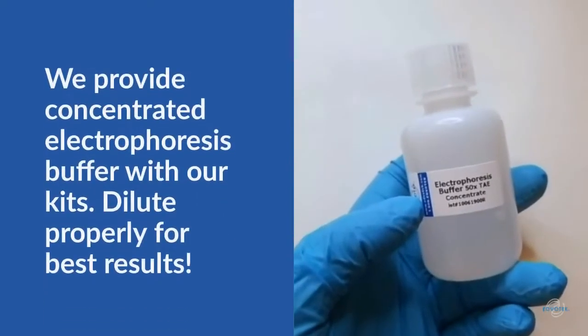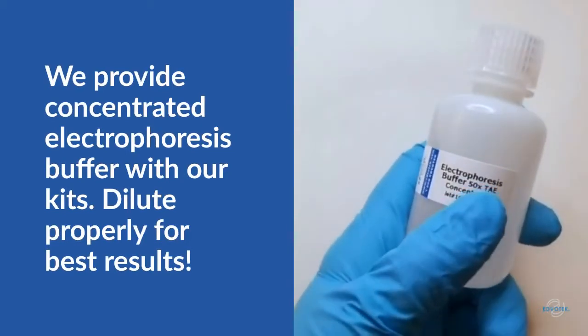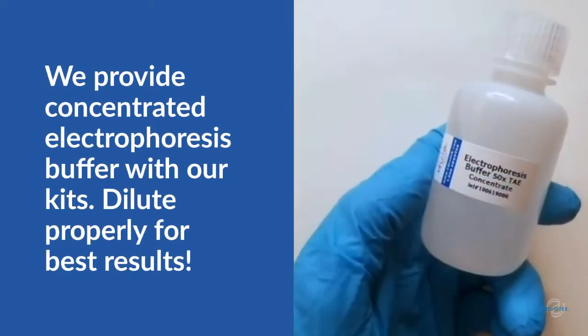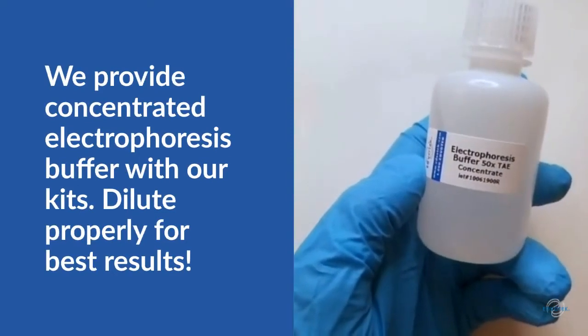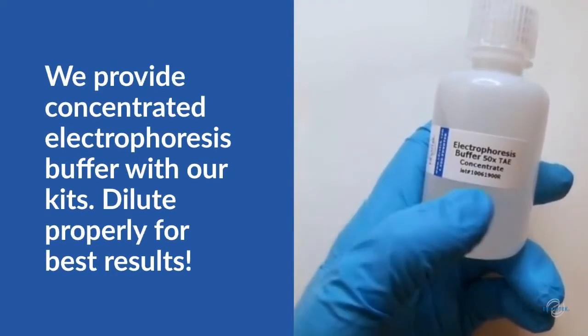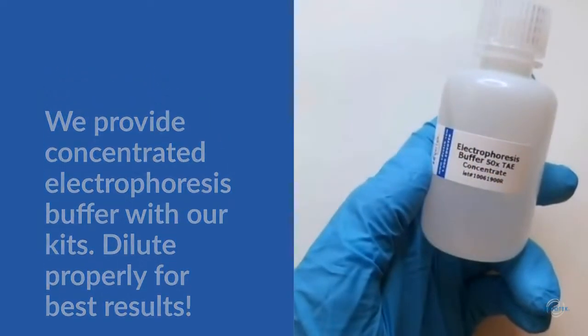We send buffer to you as a 50x concentrate which you'll dilute to 1x in your classroom laboratory. You'll add one part of concentrate for every 50 of your final solution. So if you're making 3 liters of buffer, you add 60 ml of concentrate. Check the kit literature for specifics with your experiment.